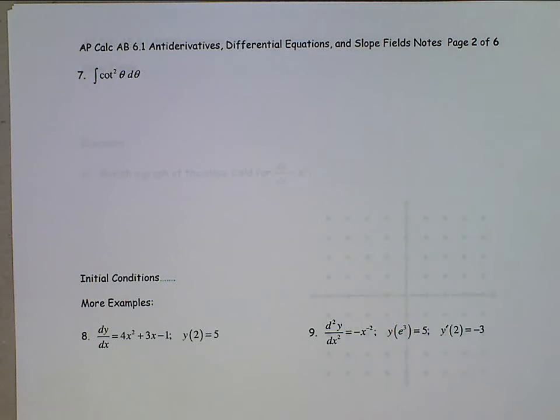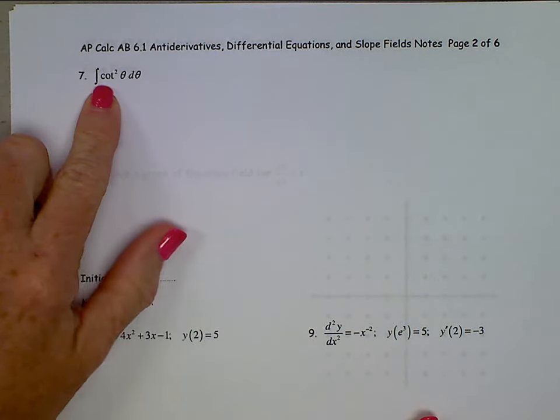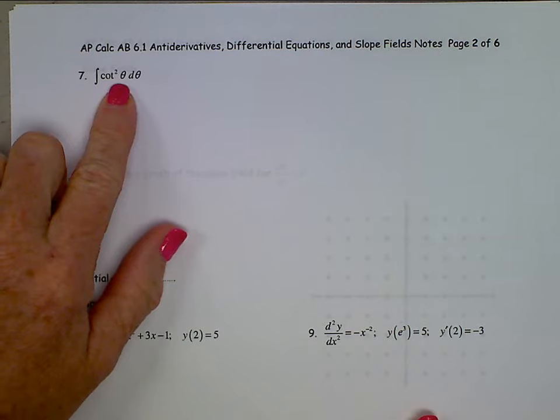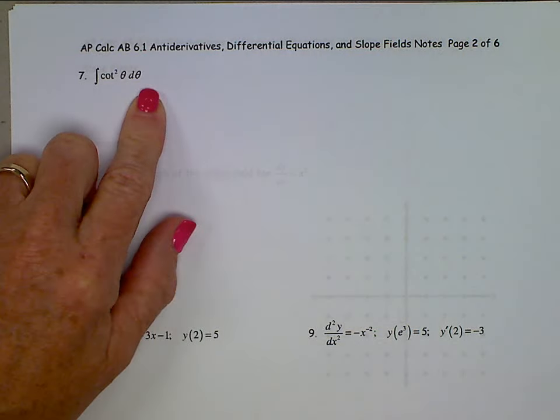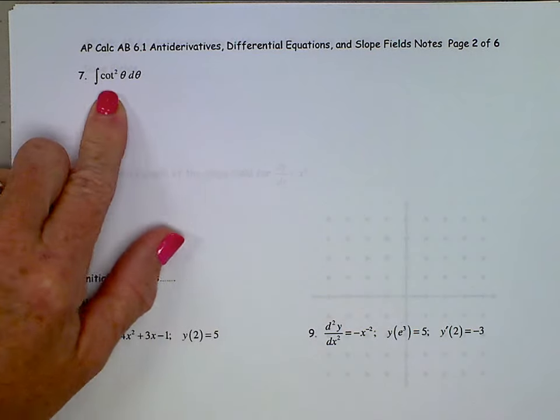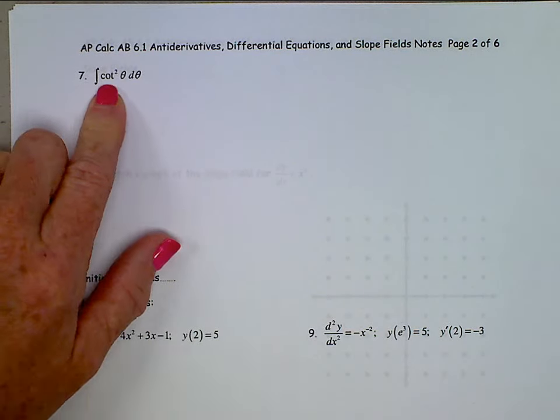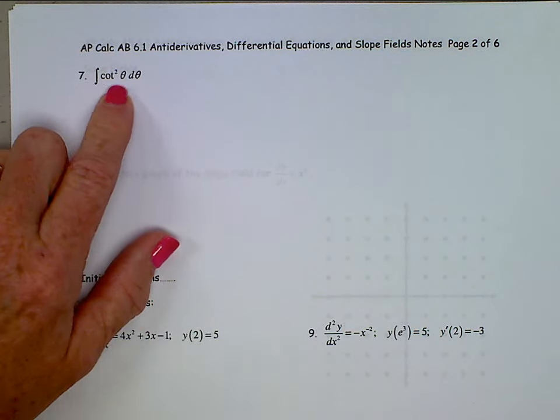AP Calculus, section 6.1, page 2. Looking at this one right here, the integral of cotangent squared theta d theta. And again, we run into a little bit of trouble here because if you think about all six trig functions, not one of them, when you do the derivative, do we get cotangent squared.